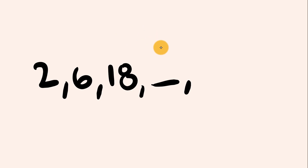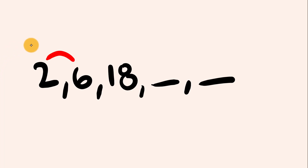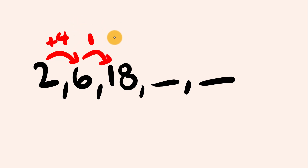Let's have a look at another example. We start with a 2, then a 6, then 18. What are the next two numbers? Let's start by seeing if we have an arithmetic sequence. From 2 to 6 we've gone up by 4, and from 6 to 18 we're going up by 12. Because we're going up by different amounts, this is not an arithmetic sequence.